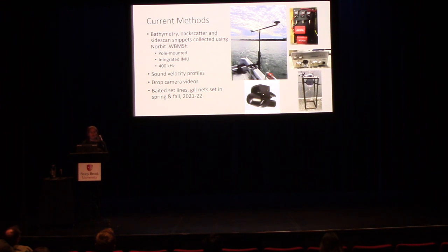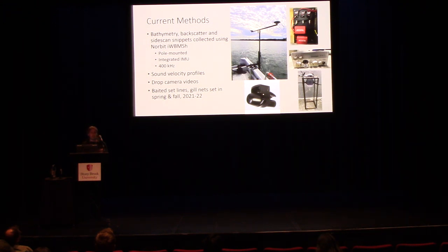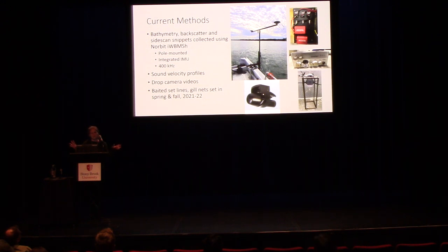Concurrently, we have been using baited set lines as our primary fishing gear. We've tried gill nets, but in the upper Niagara River the velocity doesn't make it necessarily safe in a lot of places, and we have a lot of Cladophora — an algae that sloughs off — which makes our gill nets unfishable. It's just like a wall of green within an hour. So mostly baited set lines.